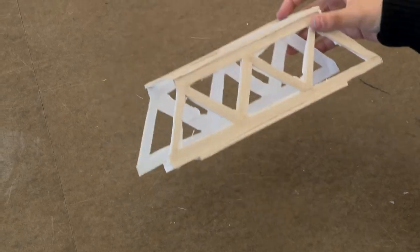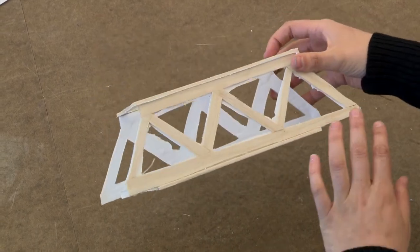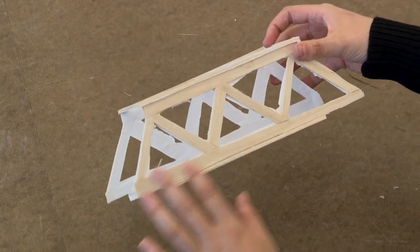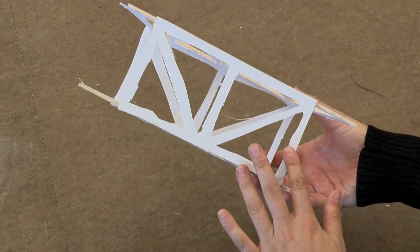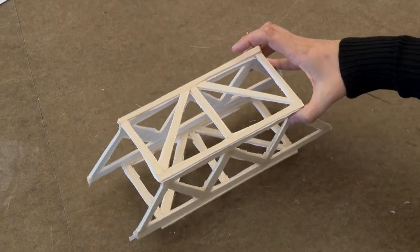So here we have an example of a completed bridge. You can see I used a truss formation on the sides as well as on the bottom and the top for lateral support.